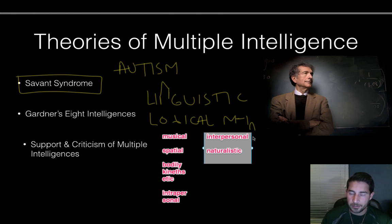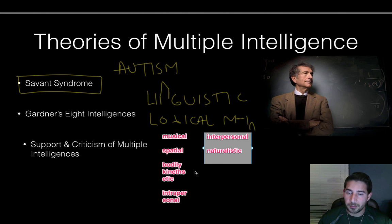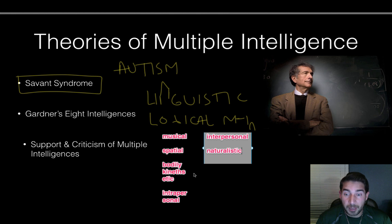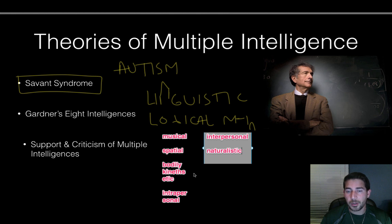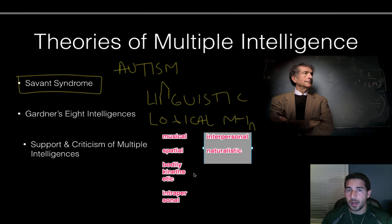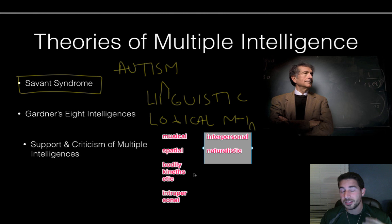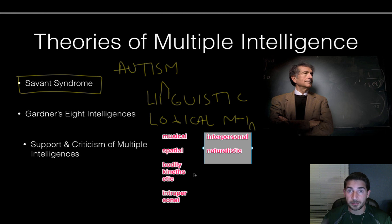Support for this is that we see these different people and this brain damage research — people who are really good at something but maybe lacking in others. Like Picasso maybe didn't have the interpersonal skills that Gandhi had, but he had amazing spatial intelligence. The criticism of multiple intelligences that continues today is that there's no reliable test — we talk about people being intelligent in all these different ways, but psychology is a science and we need to be able to test it, weigh the evidence. That's a major criticism of multiple intelligences today.